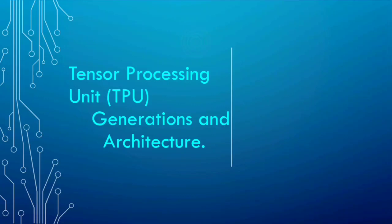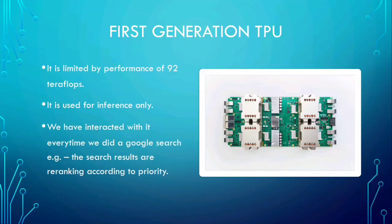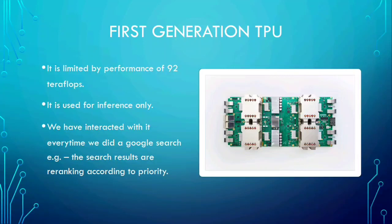Types of TPU. There are three generations of TPUs. The first generation TPU is an 8-bit matrix multiplication engine driven with CISC instructions by the host processor across a PCIe 3.0 bus. It is manufactured on a 28 nanometer process with a die size less than 331 millimeter square. The clock speed is 700 megahertz and it has a thermal design power of 28 to 40 watts. It has 28 MB of on-chip memory and 4 MB of 32-bit accumulators taking the results of a 256x256 systolic array of 8-bit multipliers. Within the TPU package is 8 GB of dual channel 2133 megahertz DDR3 SDRAM offering 34 GB per second of bandwidth. Instructions transfer data to or from the host, perform matrix multiplications or convolutions, and apply activation functions. It was developed to accelerate machine learning workloads from Google data centers.